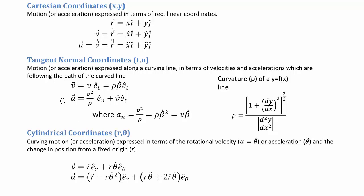Because we have both a change in magnitude of velocity and a change in the direction of velocity, we end up with an additional acceleration term — normal acceleration. Normal acceleration is expressed as the time rate of change of the direction of the tangential axis, with the most common form being v² over ρ.